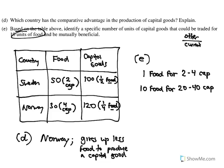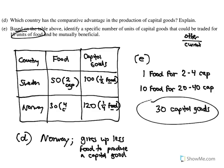That's the acceptable range. I just have to pick a number between 20 and 40. Any number between 20 and 40 would work here — I went ahead and put 30 capital goods right in the middle. That's one possible answer to part E; you could have done 21, 39, or any of those numbers.